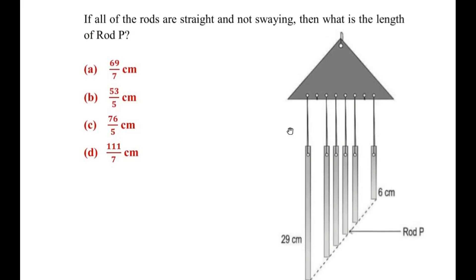If all of the rods are straight and not swaying, then what is the length of rod P? Now here they have said that rods are not shaking nor swinging. So if this is the case, then what is the length of this rod P which is over here.